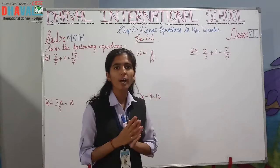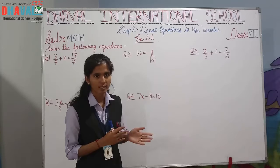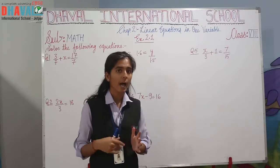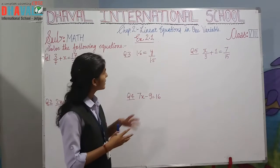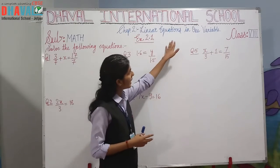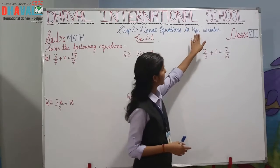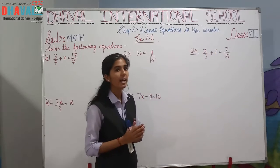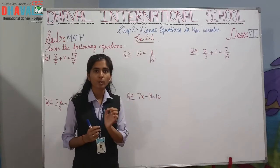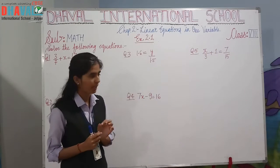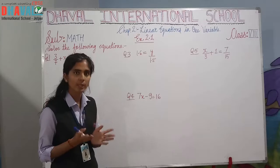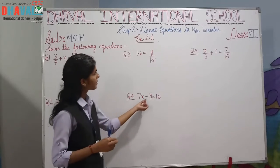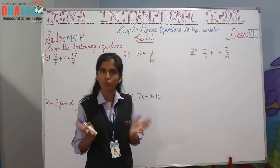Although you have studied equations in your earlier standards as well, but as per the heading of this chapter, 'in one variable' means that in each equation there is an alphabet which is what we call a variable — which is x, y, a, b, c, d, etc.